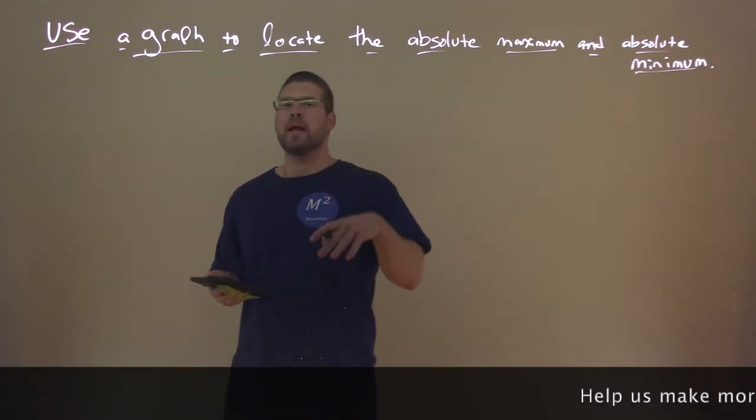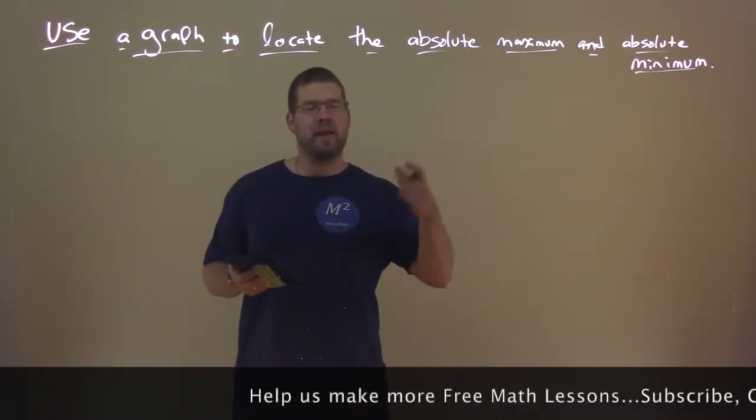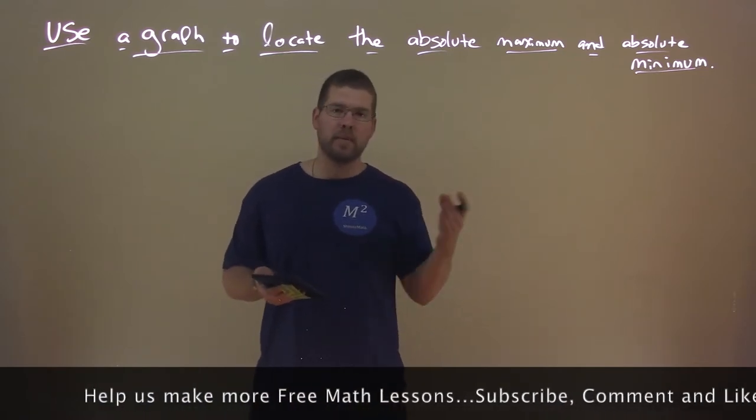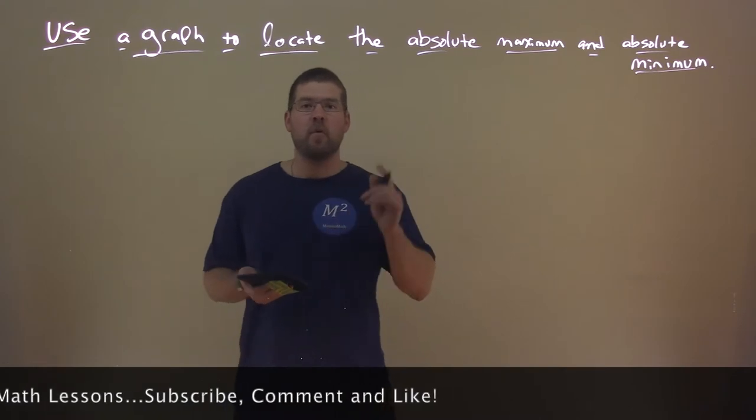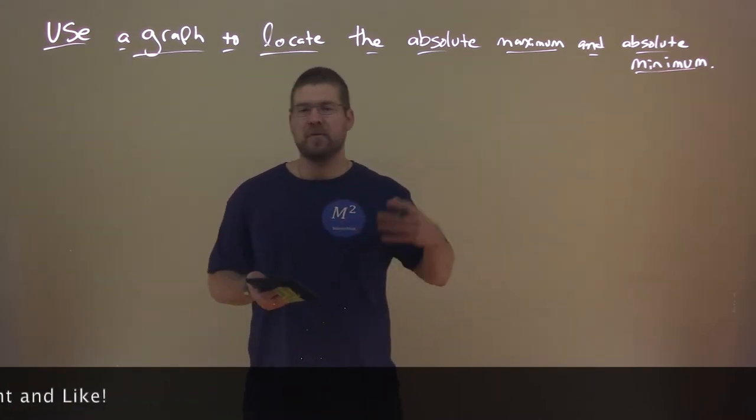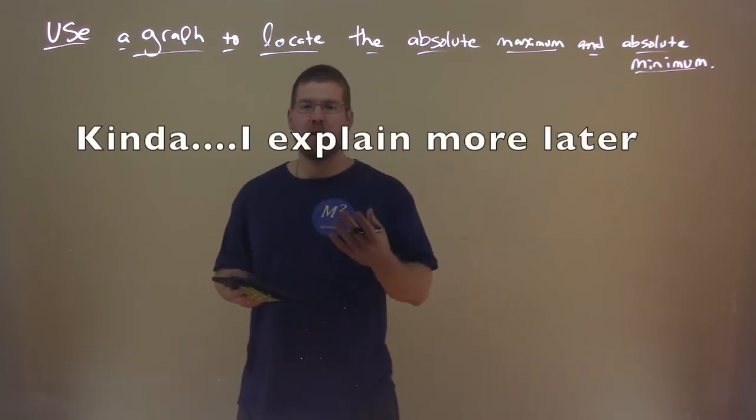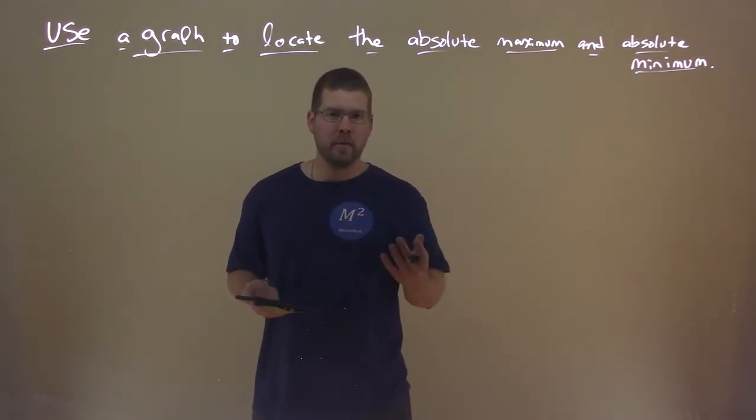So we've learned before what a local maximum and local minimum are, and what's the difference really here with an absolute maximum and absolute minimum? Well, any graph can really only have one absolute maximum or one absolute minimum. They're only one of those, where other graphs can have many local maxes and many local minimums.